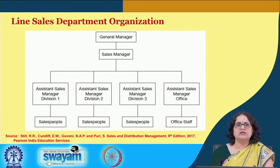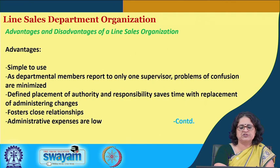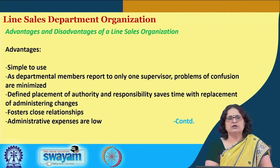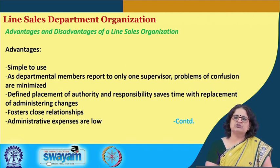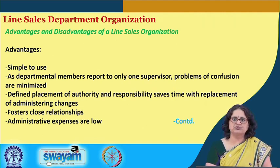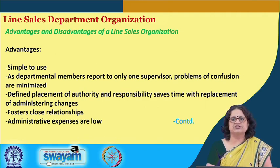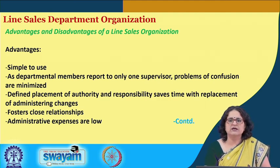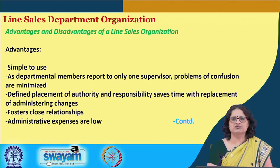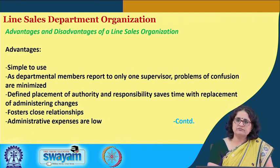The advantages of the line sales organization are: it is very simple to use, and department members report only to one supervisor, so there are no confusions about who reports to whom. They all know they have one boss. Problems or confusion are minimized. There is clear-cut definition of authority and responsibility — clear delegation of authority, defining of roles and responsibilities — which saves time. Close relationships can develop between superior and subordinate. Administrative expenses are also low because there are fewer chances of duplication of activities and better optimization of resources.